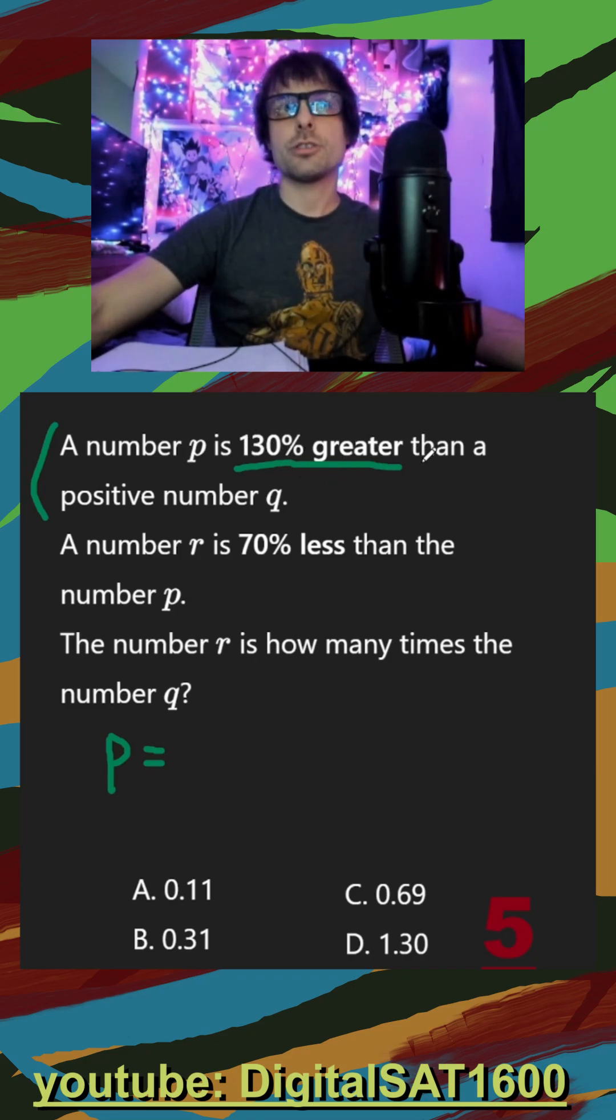But remember that greater than or more than, you have to add an extra one. If it was of, 130% of, then it would be 1.3. So since it's greater or more, it actually turns into 2.3, then a positive number Q.